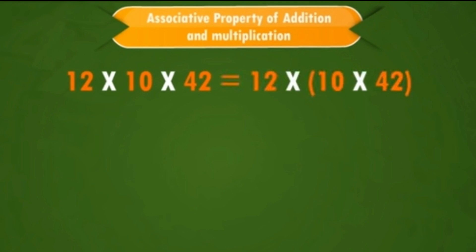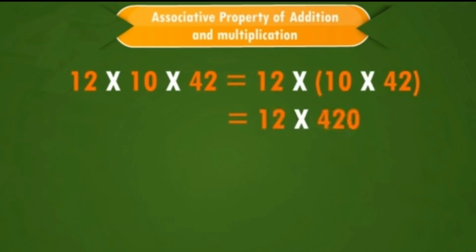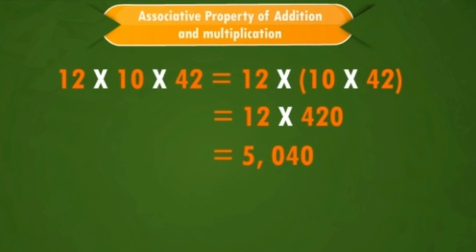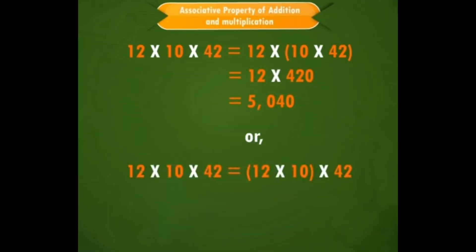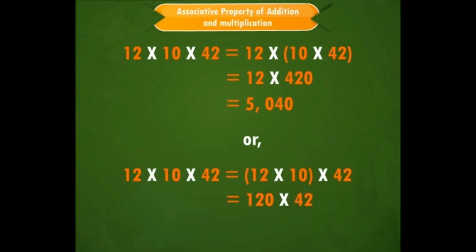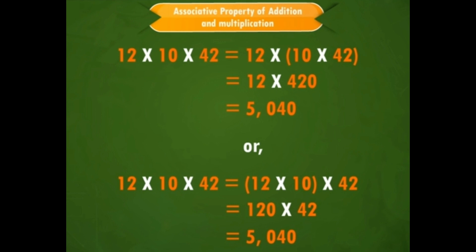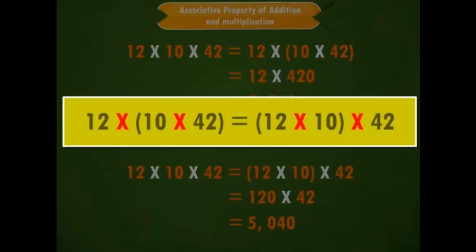Associative property of multiplication works the same way. For example, 12 × 10 × 42: we can associate the last two — 12 × (10 × 42) = 5,040. Or associate the first two — (12 × 10) × 42 = 5,040. Whatever the association, the product remains the same. This property also holds for addition and multiplication only.